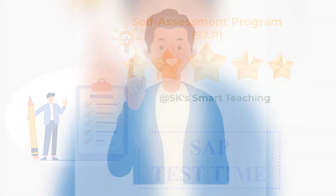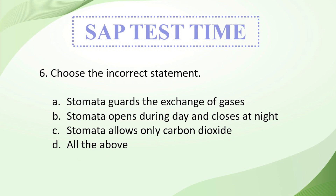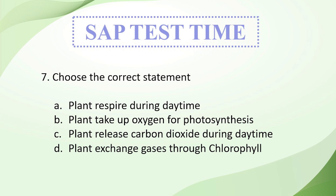It's time for the SAP test again. Your fifth question: stomata open and close according to the dash of guard cells — A: flaccidity; B: turgidity; C: rigidity; D: none. Sixth question — choose the incorrect statement: A: stomata guards the exchange of gases; B: stomata opens during day and closes at night; C: stomata allows only carbon dioxide; D: all the above. Seventh question — choose the correct statement: A: plants respire during daytime; B: plants take up oxygen for photosynthesis; C: plants release carbon dioxide during daytime; D: plants exchange gases through chlorophyll.